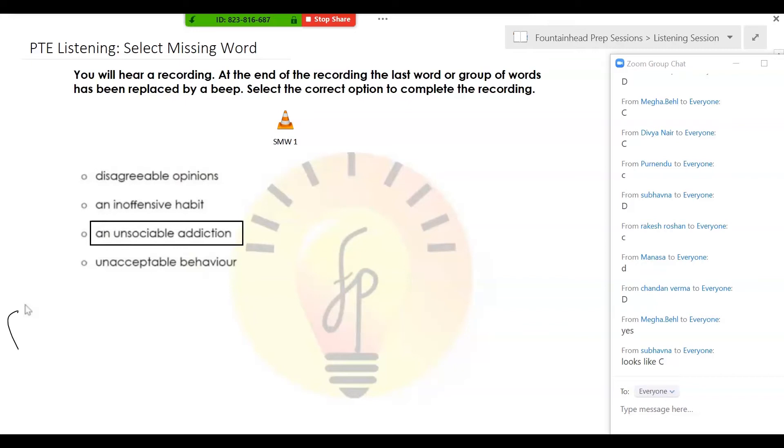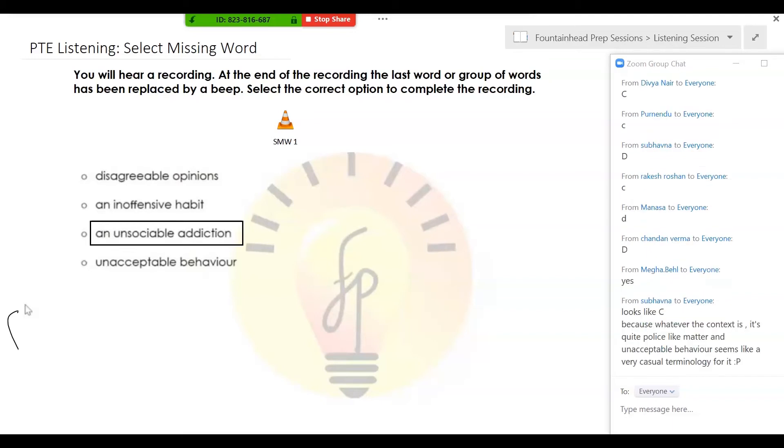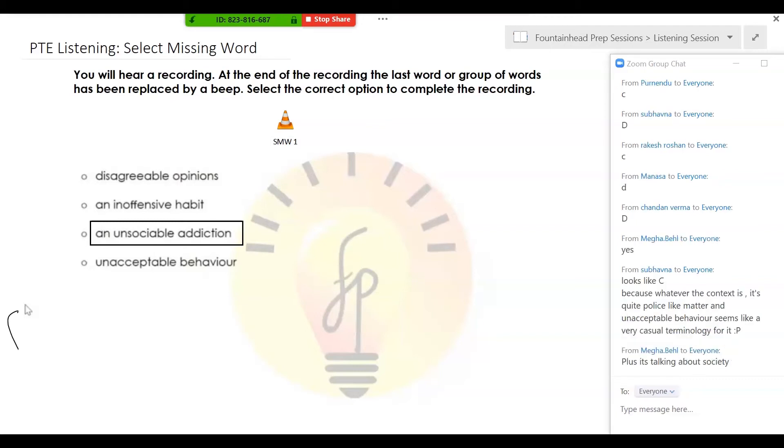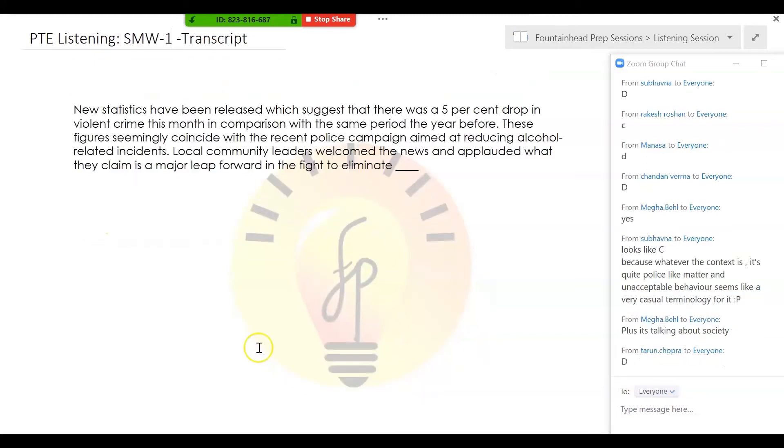Unsociable addiction. Okay, why do you think so? Bhavana or anyone who chose B. Eliminate an unsociable addiction. Because whatever the context is, it's like matter and unacceptable behavior seems like a very casual terminology for it. Okay. Unsociable addiction. Just think about it once again. Plus it's talking about society. Okay, let me show you the transcript.